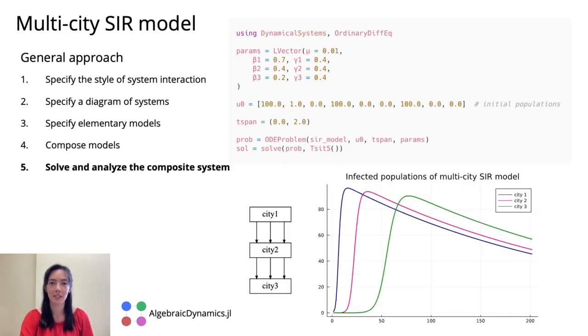Now that we have our complete multi-city SIR model, we want to solve and analyze it, which we can do using the differential equations library. We start with an initial condition with 100 people in each city and a single infected person in city one.